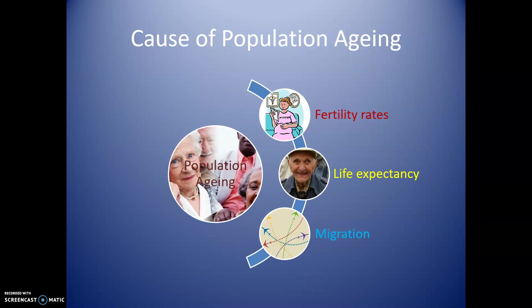What actually causes a population to age? Most of us think it simply means people are getting older, but it's a little more complicated than that. In most countries with increased affluence, the first thing that happens is a drop in fertility rates. So without any change in how long people live, if we produce fewer babies and have fewer younger children, the average age of the population increases. Beyond that, again with affluence and improved healthcare, we move on to changes in life expectancy.